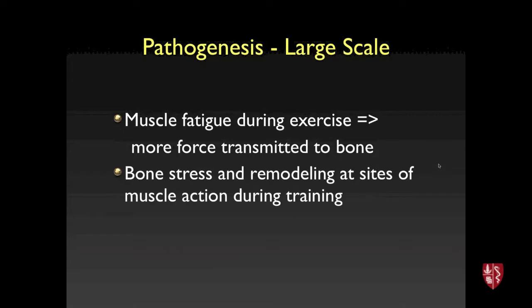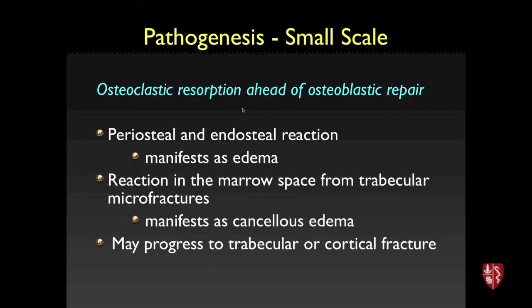The pathogenesis involves muscle fatigue during prolonged exercise causing more force to be transmitted to the bone. There are sites of bone stress and remodeling at muscle action during training that may exceed the body's ability to repair at the same rate. The result is resorption ahead of repair: periosteal or endosteal edema, marrow edema from trabecular micro fractures, and ultimately progression to frank trabecular or cortical fracture.